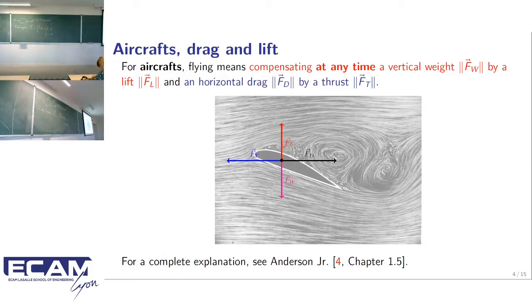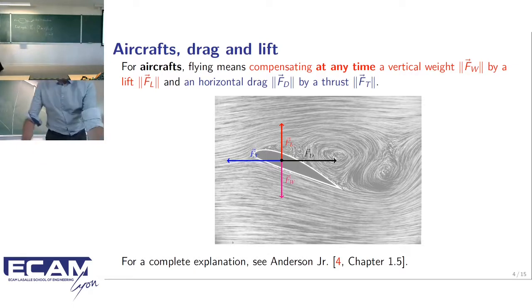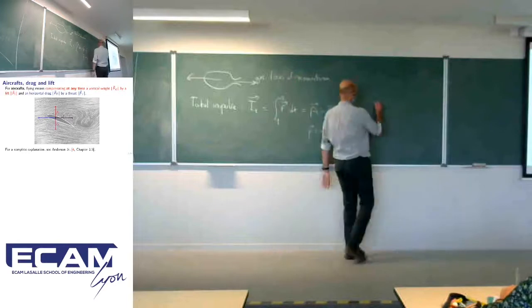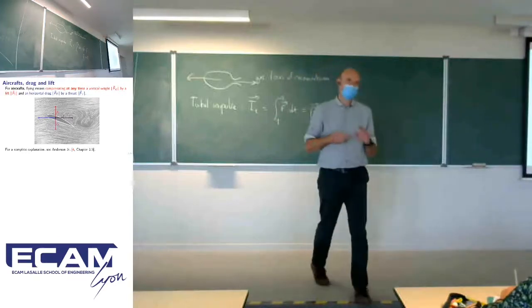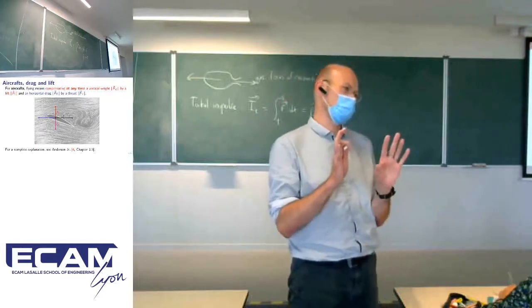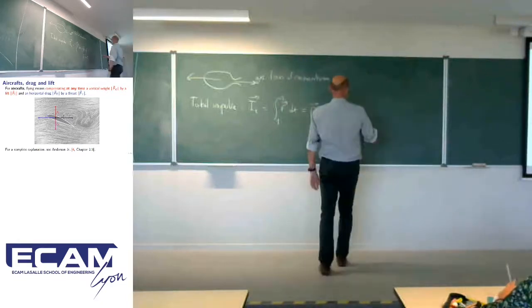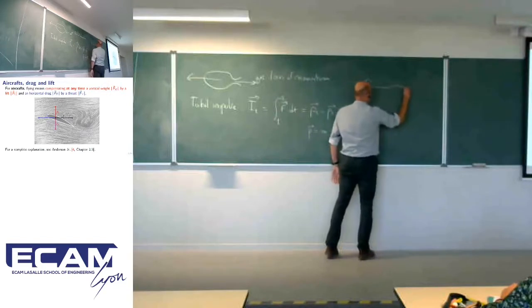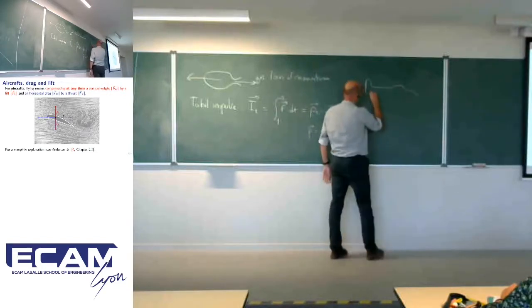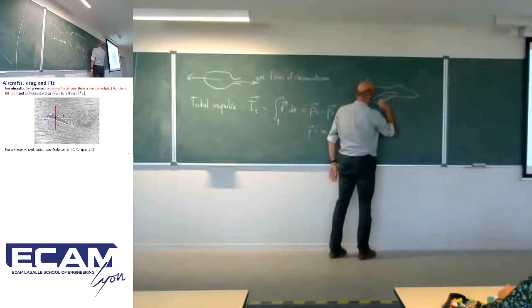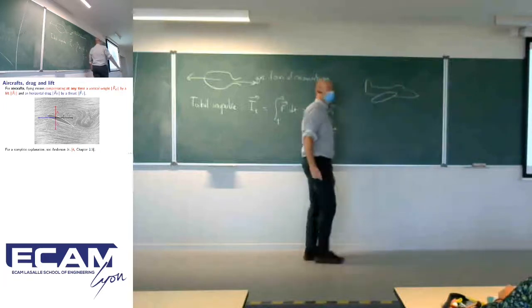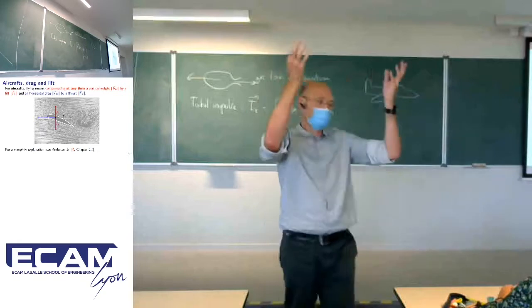What is the purpose of a propulsion system? For aircraft, it's really simple: we need to transport some mass from one point to another, and for that we need to create lift. The lift is the force that pushes your vehicle upward to maintain it in the air. If you want to create lift, you will need to move, and if you move, you will create drag. Drag is the resistance force created by the motion of the vehicle.